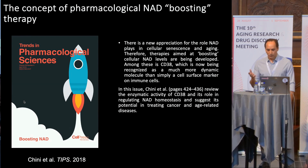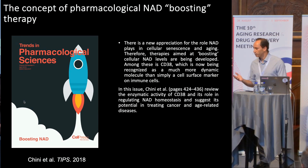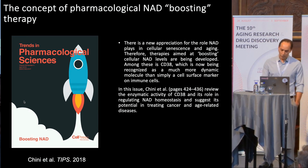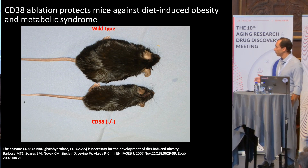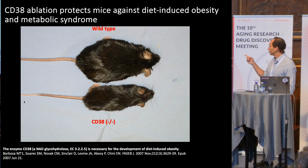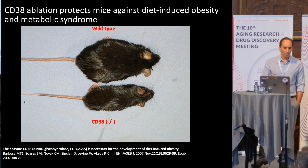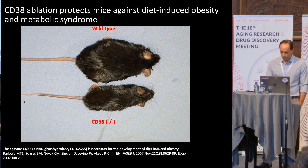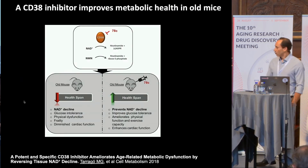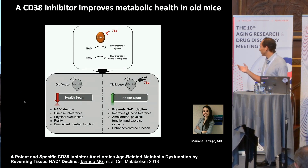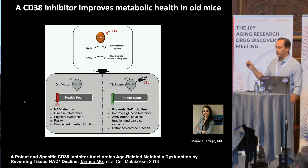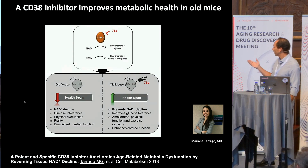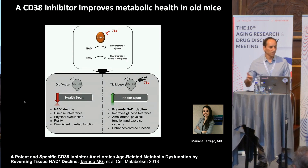To conclude: can we target this? NAD-boosting therapy has been going on for a while — we proposed this many years ago. We showed that CD38-knockout mice are resistant to high-fat diet-induced obesity. Work by Mariana Tarago published in Cell Metabolism showed that the drug GSK78C, a potent small molecule CD38 inhibitor, can actually ameliorate several features of aging in old mice — improved glucose homeostasis, better exercise capacity, better cardiac function.